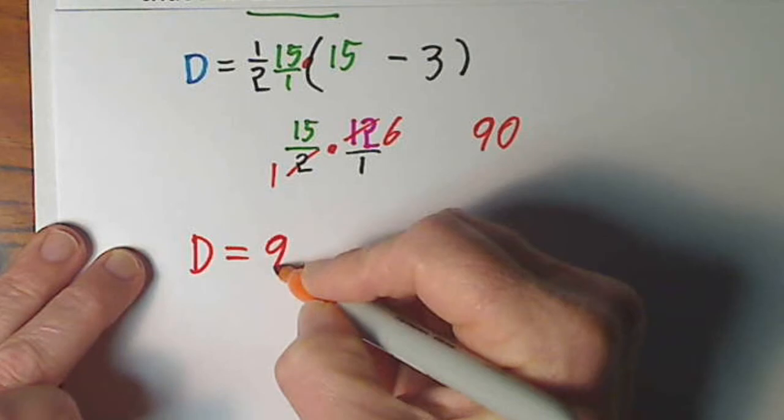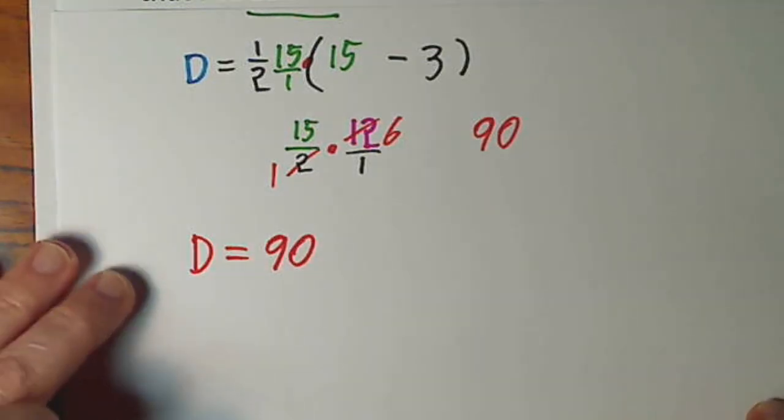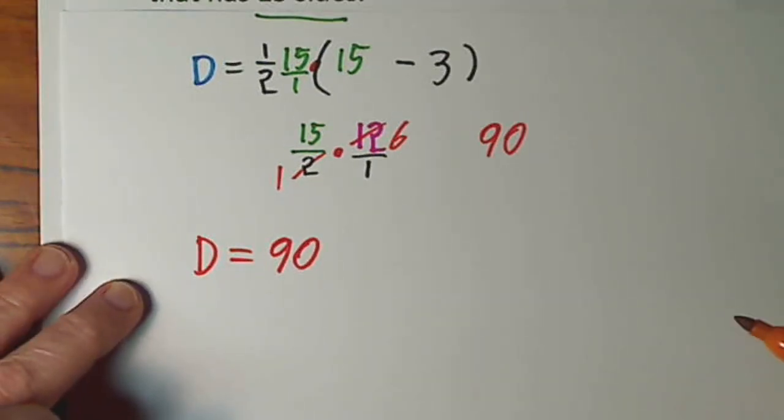So if you have a polygon with 15 sides, there are 90 diagonals.